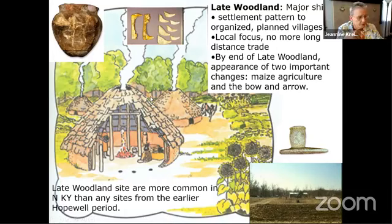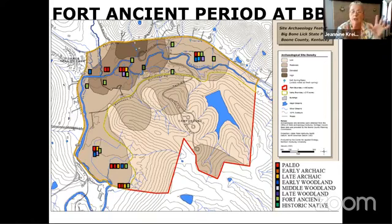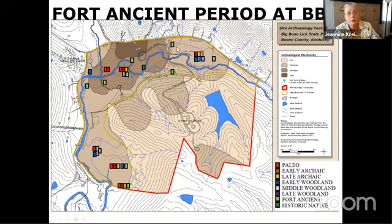Corn shows up in this area, and with corn comes fully planned, organized villages — the Fort Ancient time period, shown in pale green throughout the entire park. The big fields where they have the salt festival are on a Fort Ancient village site. There's a Fort Ancient village here, another over here, and Fort Ancient components pretty much throughout the park.